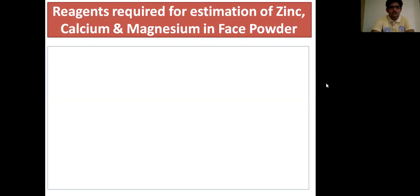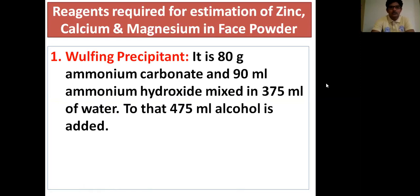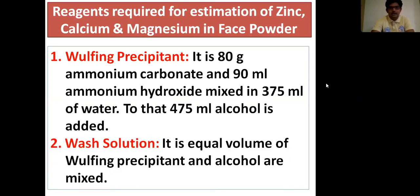The reagents required for estimation of zinc, calcium and magnesium present in the face powder are given below. The first reagent is the wolfing precipitant: 80 g ammonium carbonate and 90 ml ammonium hydroxide mixed in 375 ml of water, to which 475 ml alcohol is added. The second reagent is the wash solution: equal volumes of wolfing precipitant and alcohol are mixed.